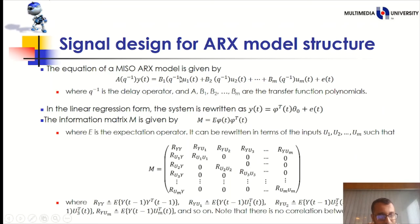The first equation represents the MISO system with ARX model structure. Where Q inverse is the delay operator. And A, B1, B2, Bm are the transfer function polynomials. Then the second equation in the linear regression form. Where the output Y(t) equals to phi transpose(t) theta plus E(t). Where phi transpose(t) theta(t) is the one step ahead predictor. And E(t) is the noise. Now the information matrix M is given in below formulation. Where R YY equals to expectation of Y(t-1), Y transpose(t-1) and so on.